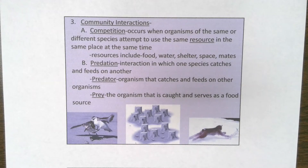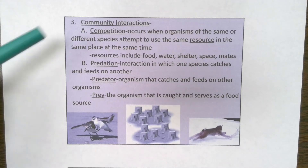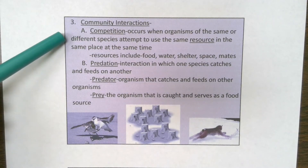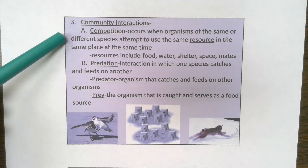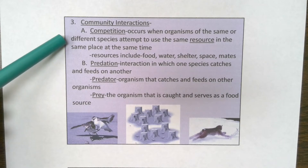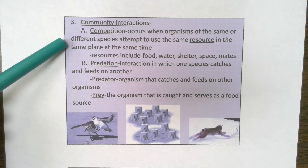When organisms or species fill different niches in nature, that reduces the first community interaction: competition. Competition does not always have to be direct fighting. By simple definition, competition occurs when organisms of the same or different species attempt to use the same resource in the same place at the same time — and it's important that all of those components be in the definition.